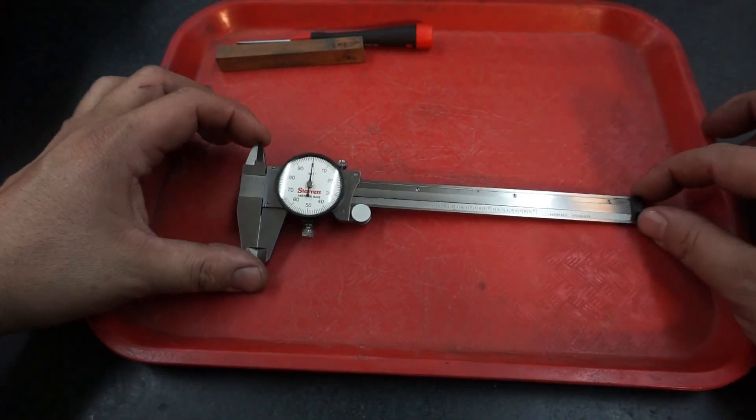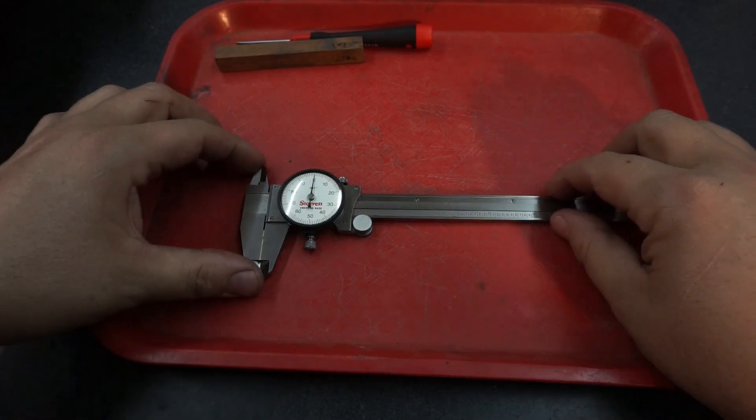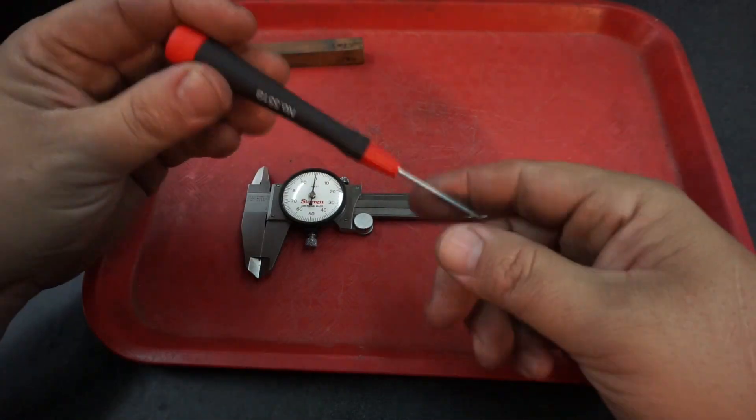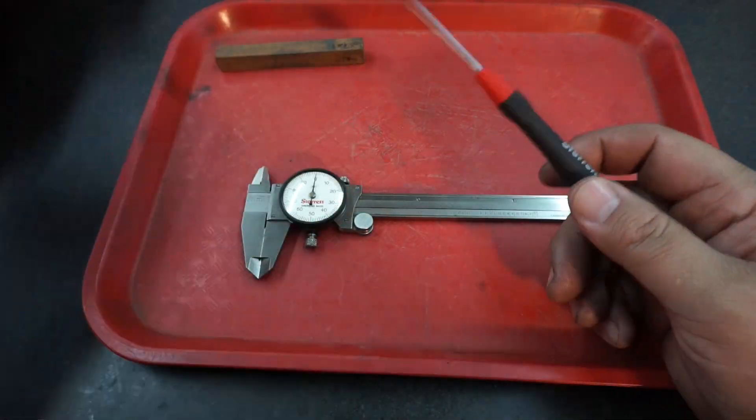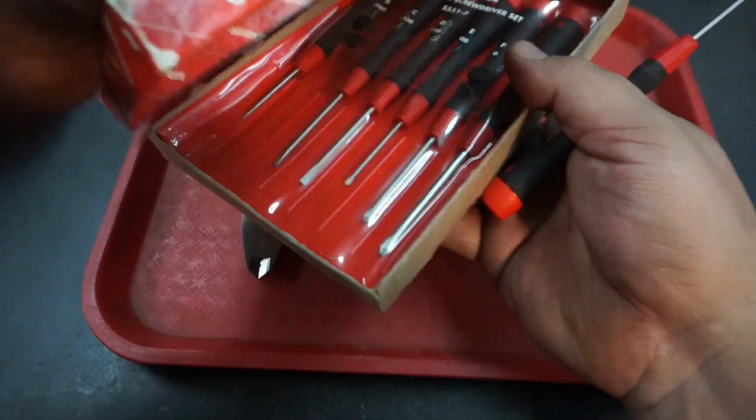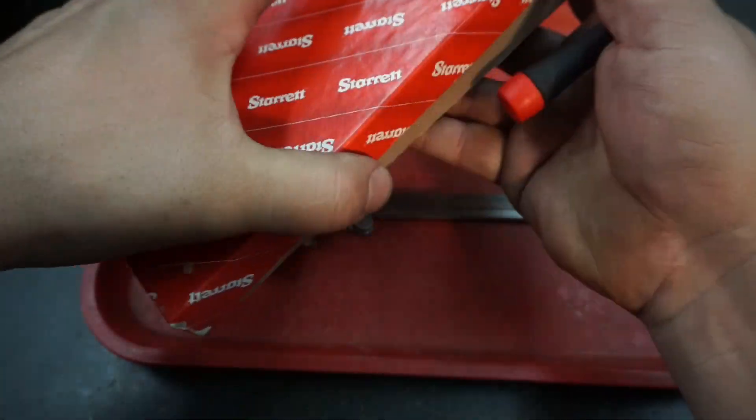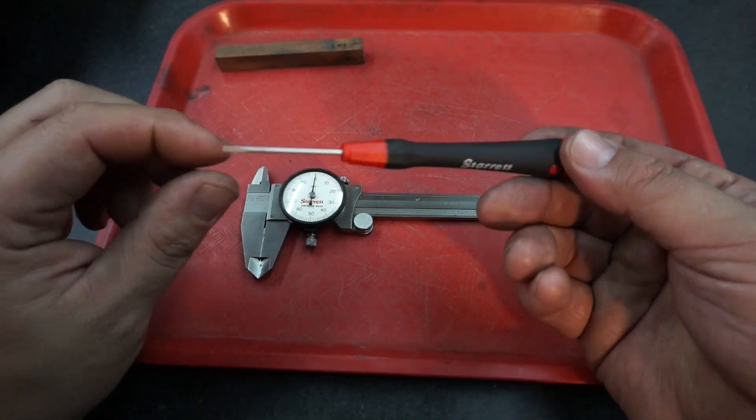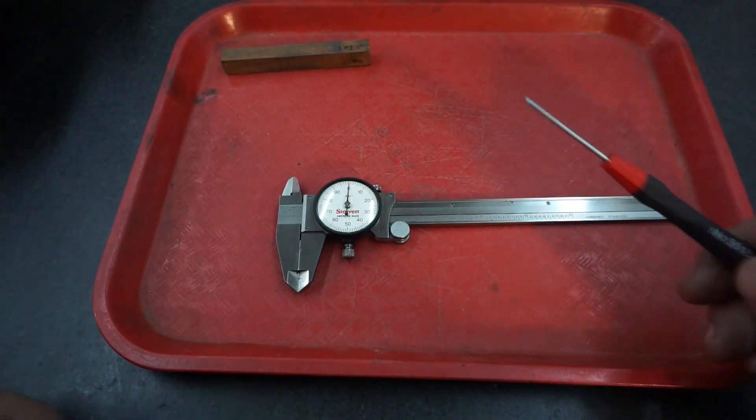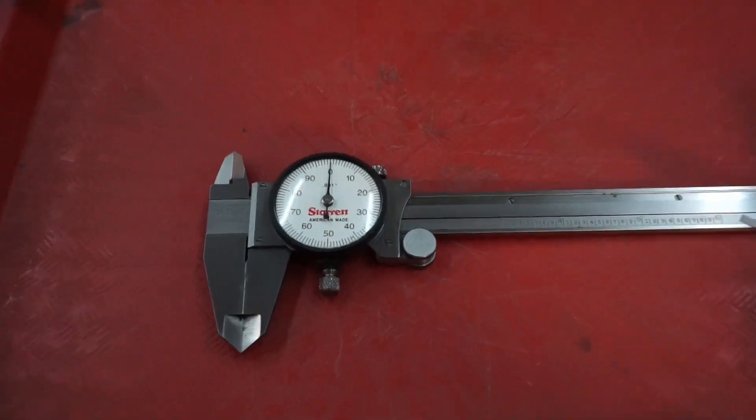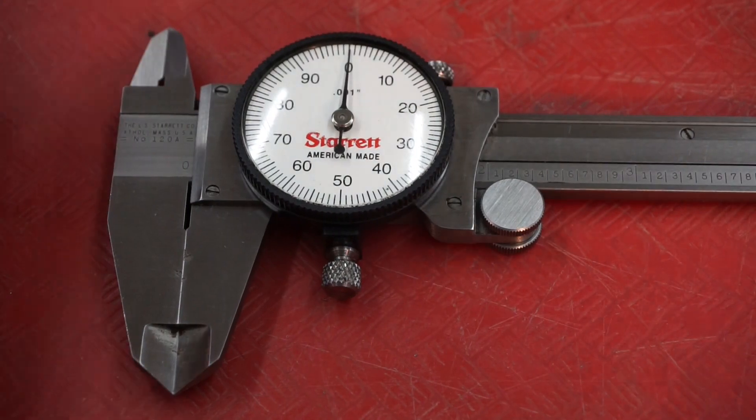Okay, so what you're going to need is a small flat screwdriver. I got my little set of Starrett's here that I bought for doing this kind of stuff. You don't have to have Starrett's, you can have any kind of screwdriver you want, but this is what I used. So we're going to remove those four screws and let's tighten up the shot here so you can see it a little bit better.